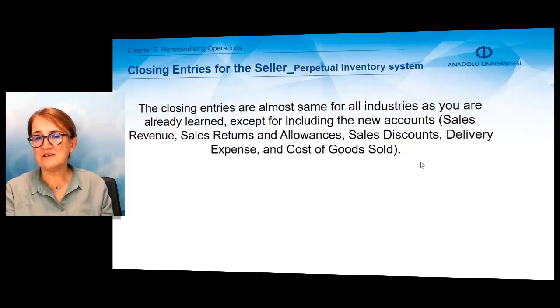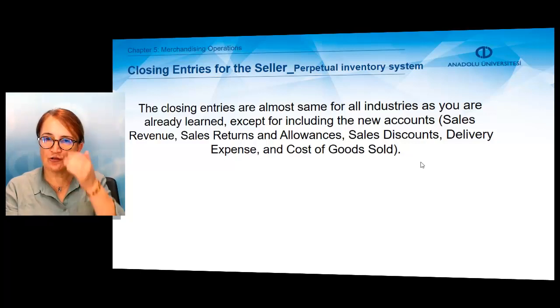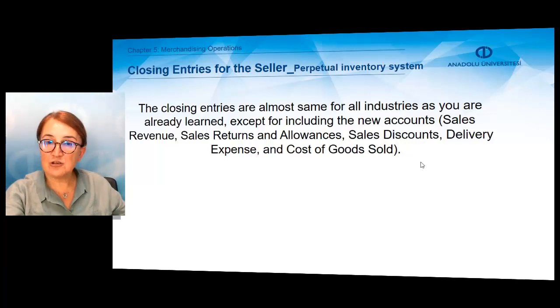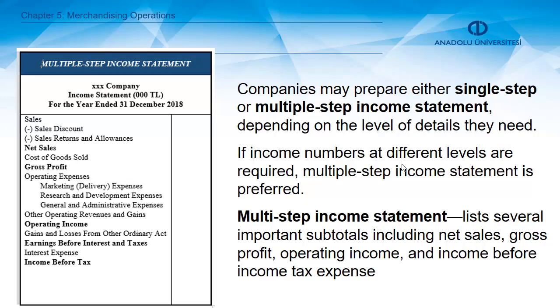After the physical count and investigation, in the adjustment process we make the necessary adjustments and then close all temporary accounts. Remember, all revenue and expense accounts are temporary. For merchandise inventory-related events, we have new income statement accounts: Sales Revenues, Sales Returns and Allowances, Sales Discount, and Cost of Goods Sold. We close all those temporary accounts using the Income Summary account — revenue accounts are debited, Income Summary is credited; then Income Summary is debited and expense or contra revenue accounts are credited. The balance of Income Summary gives us net income or net loss.